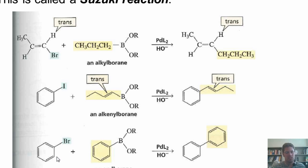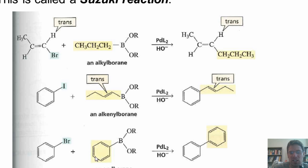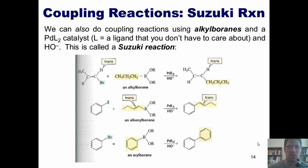Here's an additional example: a phenyl bromide reacting with a phenyl borane, treated with Pd(L)2 and hydroxide. What ends up happening is this alkyl group — a benzene ring — completely takes the place of the halide in the starting material, giving the coupled product. This type of reaction is called a Suzuki reaction.